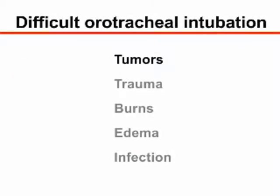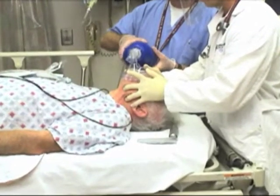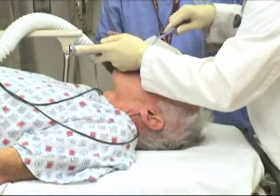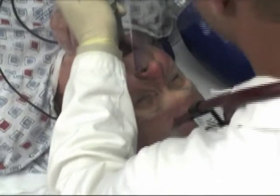The presence of tumors, trauma, burns, edema, or infection of the pharyngeal or laryngeal soft tissues may distort airway anatomy, leading to difficult orotracheal intubation. When faced with a potentially difficult airway, consulting with an experienced intubator and preparing to use an alternative intubation technique are recommended.